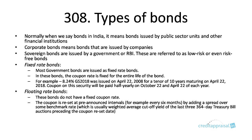Then there is something called floating rate bonds. These bonds do not have a fixed coupon rate. The coupon is reset at pre-announced intervals — say, every 6 months. Similar to how base rate and floating rates of interest are discussed in the case of housing loans, here a spread is added to some benchmark rate, like the 364-day treasury bill. There will be a benchmark and over that a spread is added, reset at periodic intervals. So the coupon rate keeps changing in floating rate bonds.